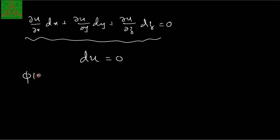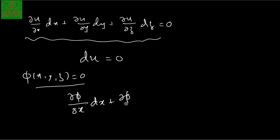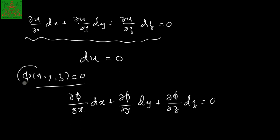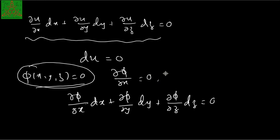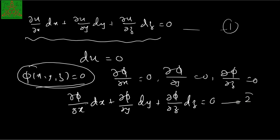And since phi(x, y, z) = 0, if you differentiate this, we also have (del phi/del x)dx + (del phi/del y)dy + (del phi/del z)dz = 0. So del phi/del x = 0, del phi/del y = 0, and del phi/del z = 0. Now, if we add these two equations by multiplying a parameter lambda to the second equation and then adding them,